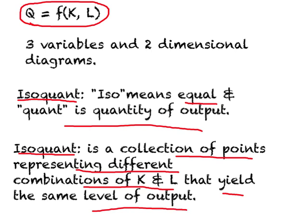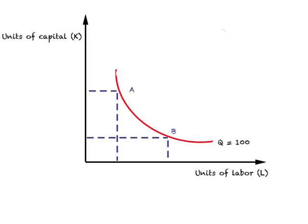This is based on the assumption that there are different technologies available to produce a given level of output. Different technologies means you can use a larger amount of capital relative to labor, or a relatively larger amount of labor relative to capital, and produce the same level of output. Isoquants are very similar in analysis to the indifference curves we studied on the consumer side, and since we have already looked at indifference curve theory, this uses the same kind of approach on the production side.